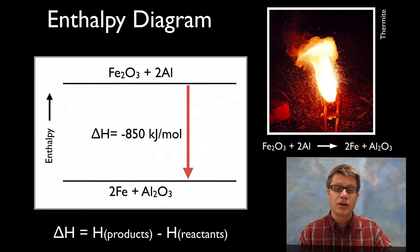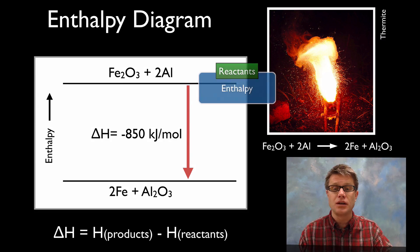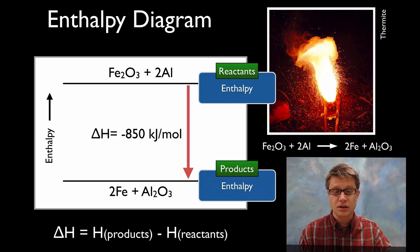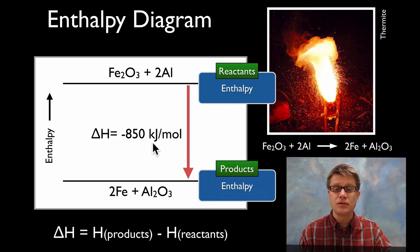An enthalpy diagram is different from an energy diagram in that we simply put the enthalpy of the reactants and the enthalpy of the products. Since we're subtracting the reactants from the products, and since the products in this case are lower than the reactants, we're going to get a negative value: negative 850 kilojoules per mole. Where does that energy go? It goes as thermal energy to the surroundings.